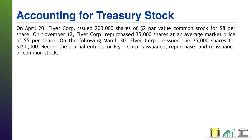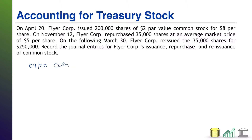All right, welcome back. Starting at the top — April 20th. On this day, we are issuing 200,000 shares of $2 par value common stock, and specifically we're issuing it for $8 per share. So we are receiving cash: 200,000 shares times $8 per share works out to $1.6 million.